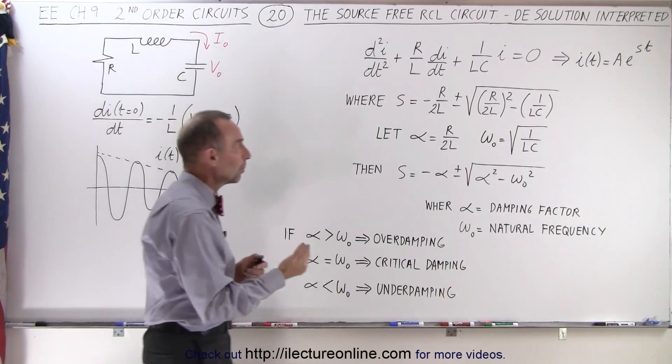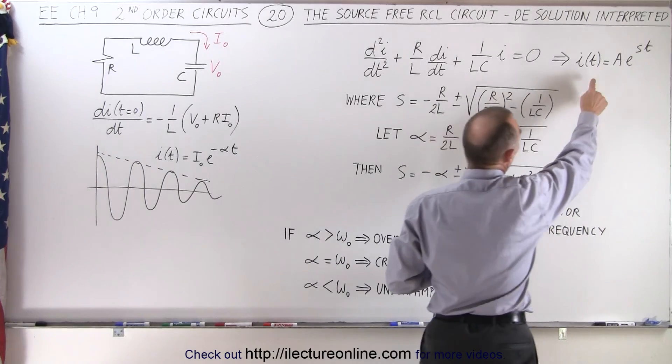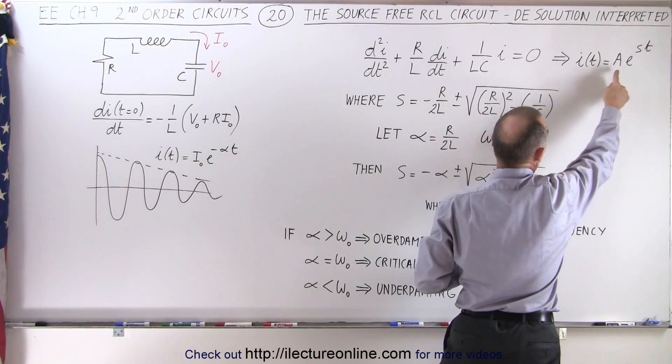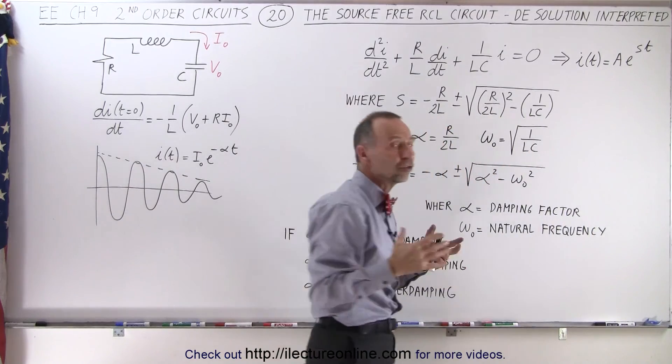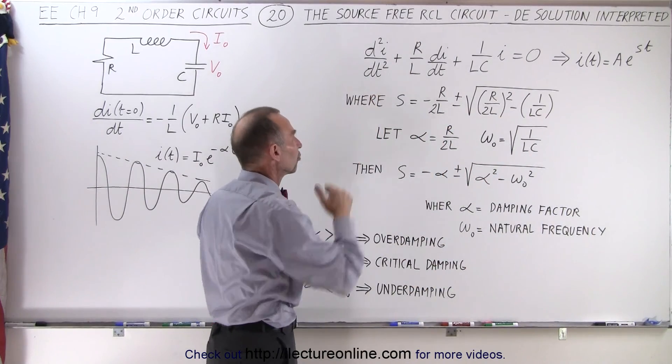So when we then set up a general solution to the equation where the current as a function of time is equal to the amplitude of the current times e to the st, we then have to solve for s by solving the differential equation.